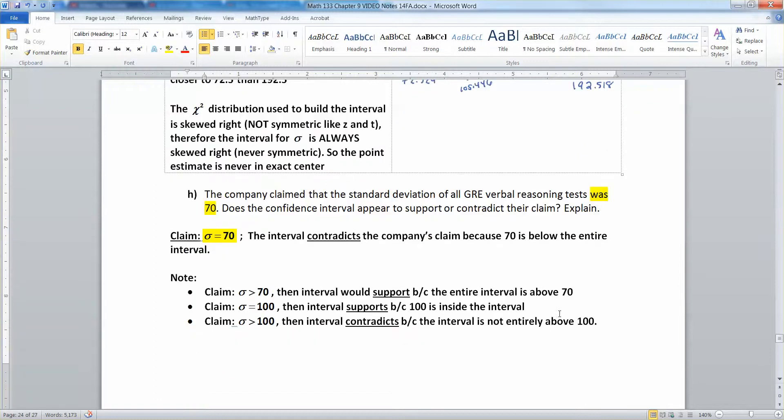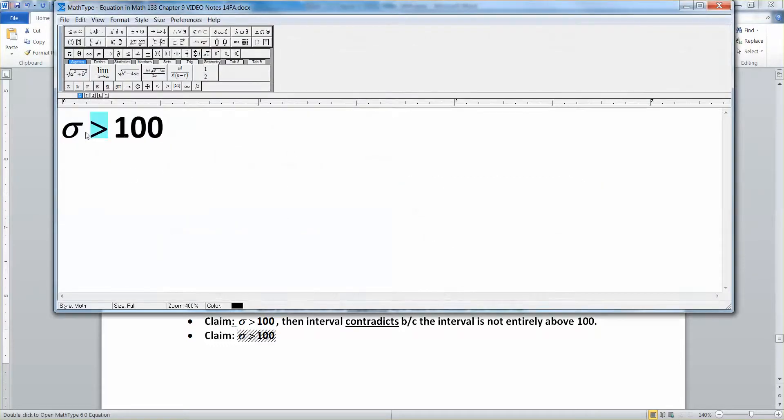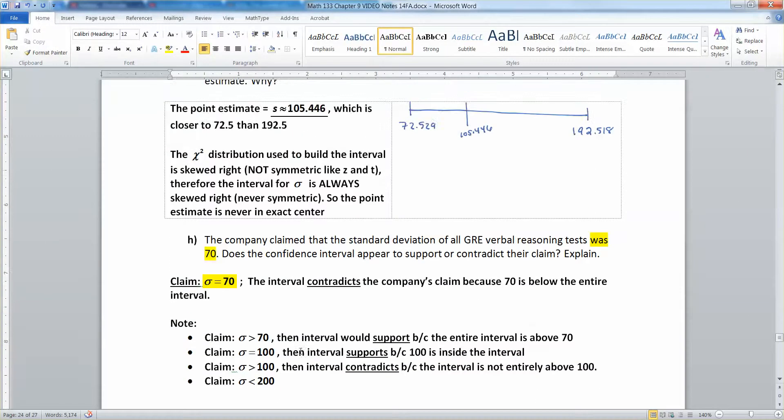What if they claim less than 200? If they make a claim that sigma is less than 200, then your interval supports because the entire interval is below 200.